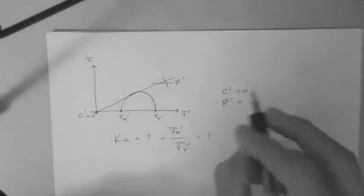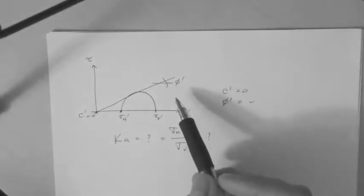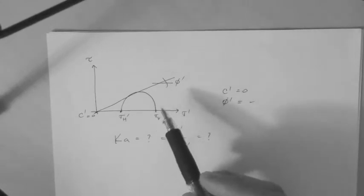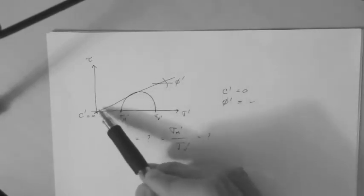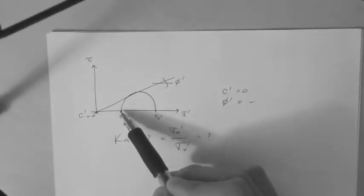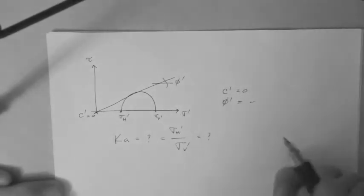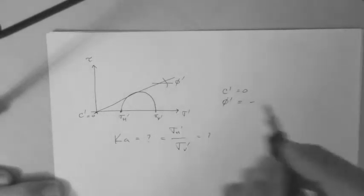Because we know the angle of friction for the soil, that's the whole point here - that we know the strength envelope, the two strength parameters. We also know that the Mohr circle is touching that envelope, that's the Mohr circle for the active condition.